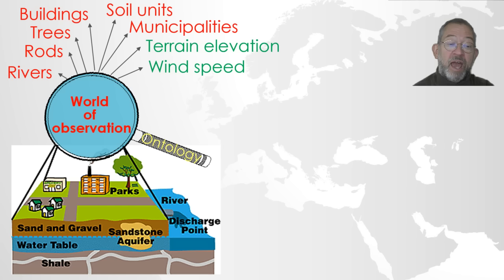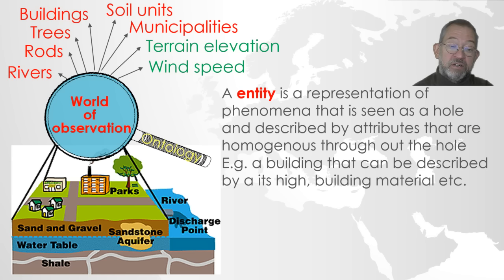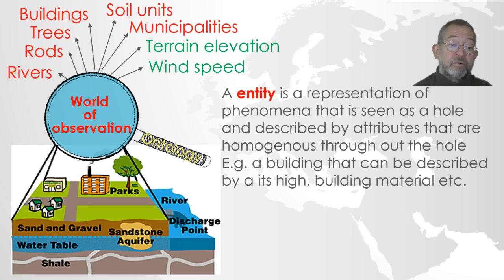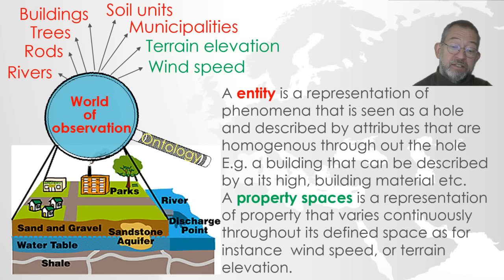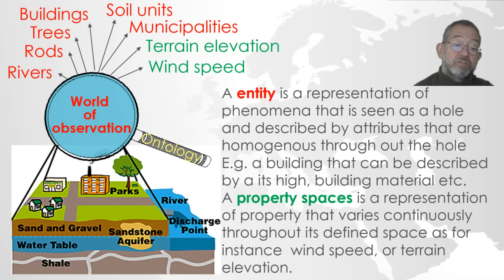An entity is a representation of a phenomenon that can be seen as a whole and is described by attributes that are homogeneous throughout that whole — so buildings can be described by height or building material. A property space is a representation of a phenomenon that varies continuously throughout space, such as wind speed, terrain elevation, and so on.